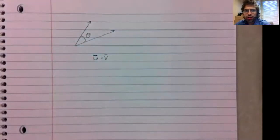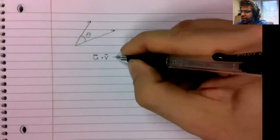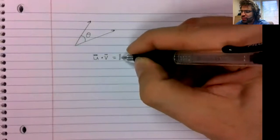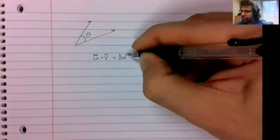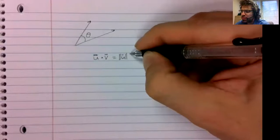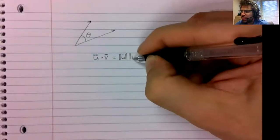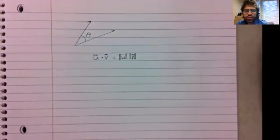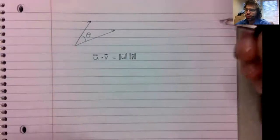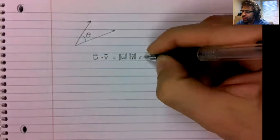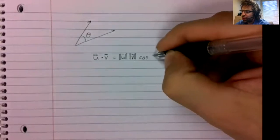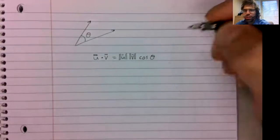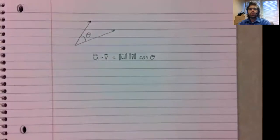The dot product of two vectors is the norm of the first vector times the norm of the second vector times the cosine of the angle between the vectors.